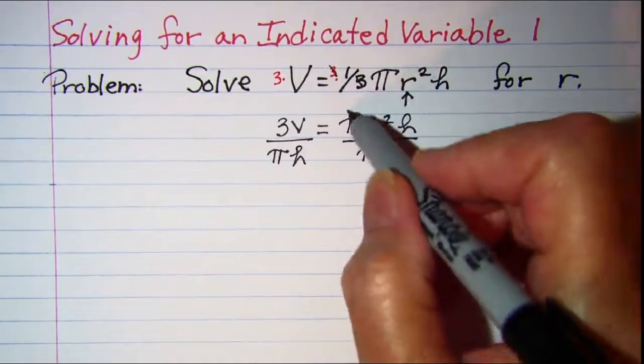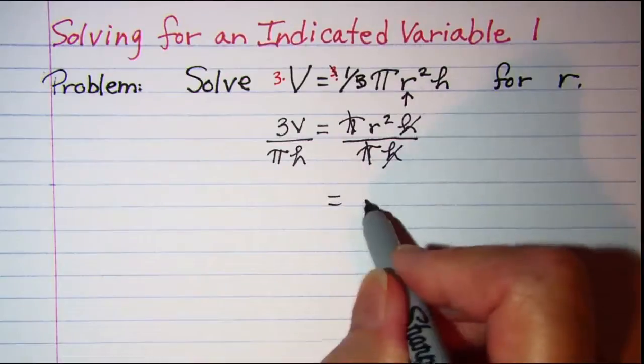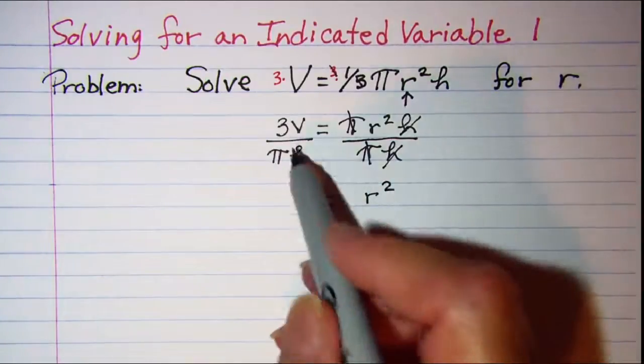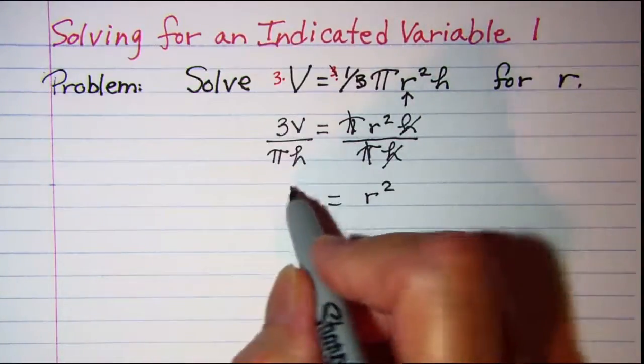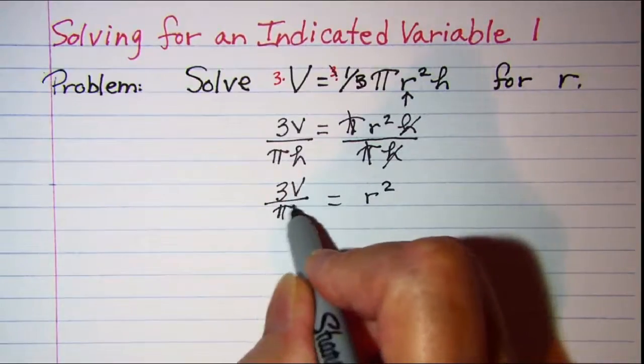On the right side the pi's cancel and the h's cancel, and I'm left with just r squared. And then on the left side I have 3V divided by pi h.